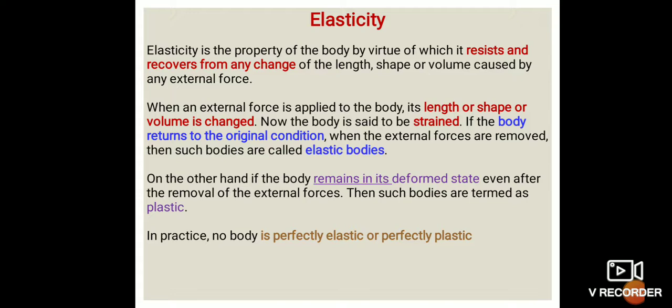When an external force is applied to the body, its length, shape, or volume is changed — the rubber band's initial shape, length, or volume changes. The body is then said to be strained. If the body returns to its original condition when the external force is removed — like the rubber band returning to its original position — such bodies are called elastic bodies.